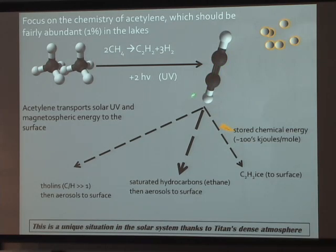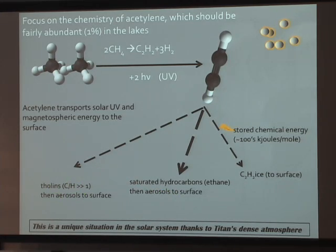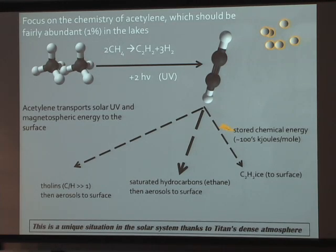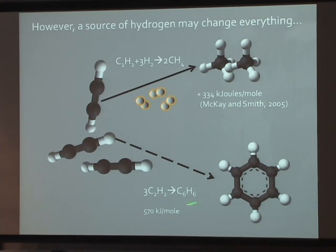This acetylene made in the atmosphere has three fates: it can go directly down to the surface as an ice; it can be converted to ethane, which goes down to the surface as well; or it can be converted to very heavy hydrocarbons and nitriles — things called tholins. It's this third pathway that might be interesting, and which has been the subject of speculation by Chris McKay and Harold Smith, and then by Grinspoon, Dirk Schultz, and others. Evidence from Cassini data — this really is benzene, C6H6 — shows deposits of benzene over large parts of the surface.